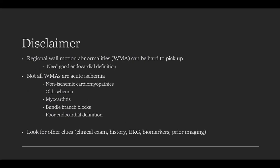It's prudent to pause and mention a couple of disclaimers. Regional wall motion abnormalities can be extremely hard to pick up. They require a good command of basic POCUS echo assessment and need good, on-axis images with good endocardial definition. Sometimes akinesis or dyskinesis can be clear, but subtle hypokinesis can be quite tricky — probably beyond the scope of a POCUS assessment — and you wouldn't really expect hypokinesis alone to contribute to a shock state.